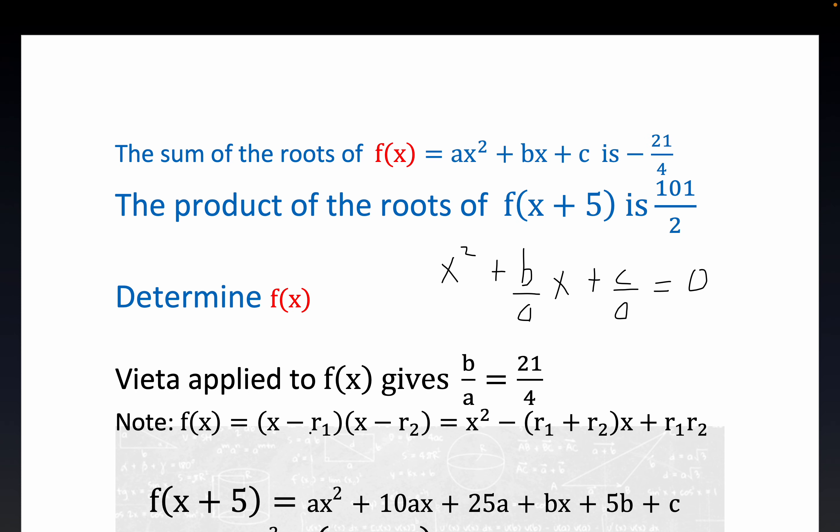If you have two generic zeros here and you expand this out, every zero corresponds to a factor. If you expand this out, you get minus the sum of the zeros right here. This object right here is minus the sum of the zeros, where R1 and R2 are the zeros.